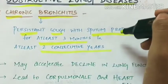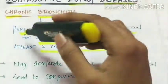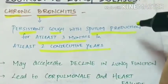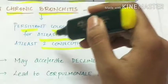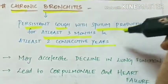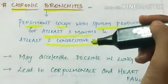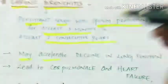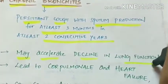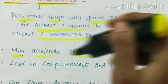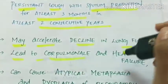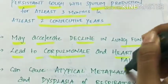This is the definition of chronic bronchitis: persistent cough with sputum production for at least three months in two consecutive years. This may accelerate decline in lung function and it can lead to cor pulmonale and heart failure.